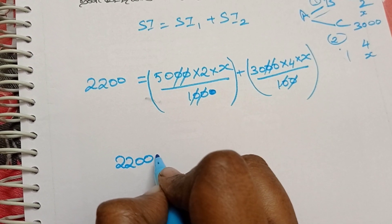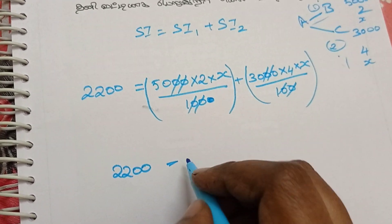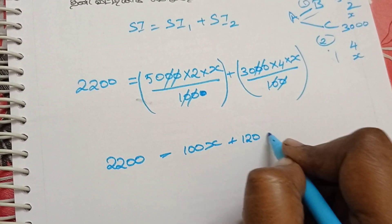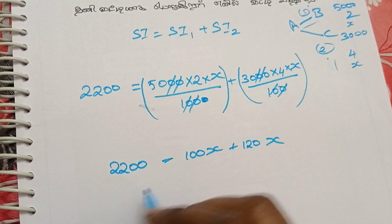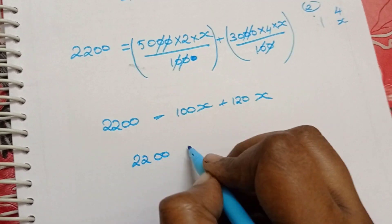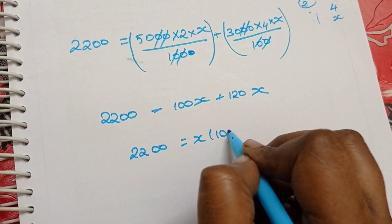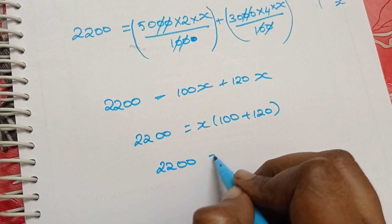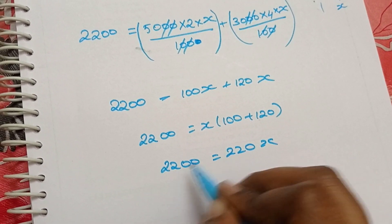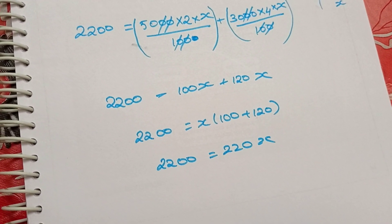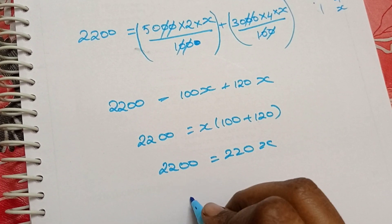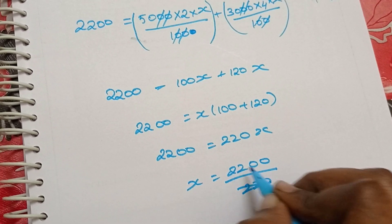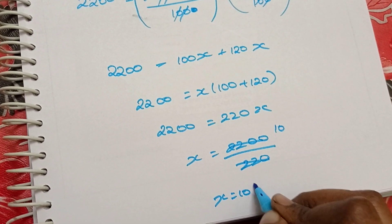Let's do: 2200 equals 100x plus 120x. So x is common, and 2200 equals 100 plus 120 into x, which gives 2200 equals 220 into x. Cancelling, x is equal to 2200 divided by 220, which is 10. So x is equal to 10%.